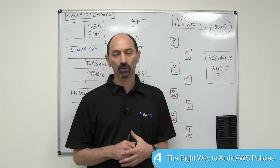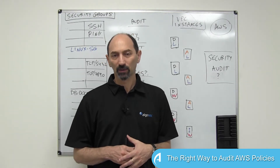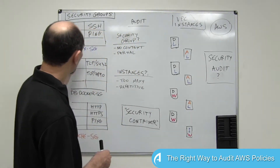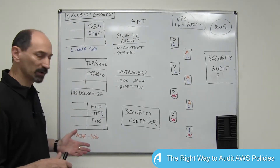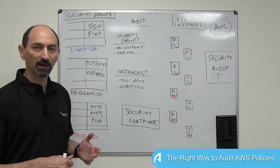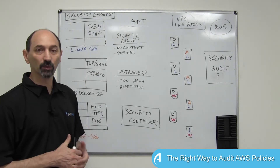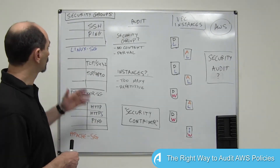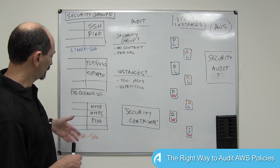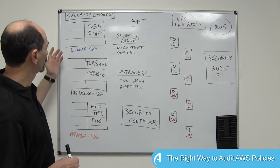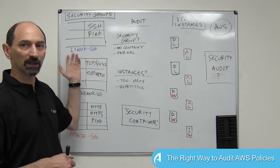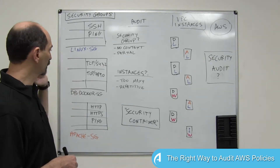Let's acquaint ourselves quickly with what you have to deal with. On the left-hand side here, you can see the security groups that were defined in your estate. You can see that I've sketched three of them. There's one in blue for Linux-based servers.